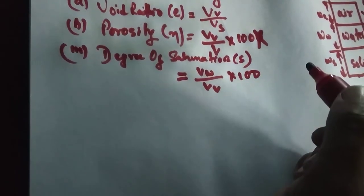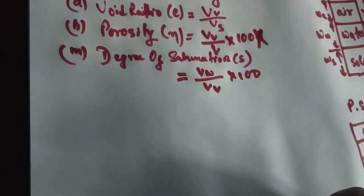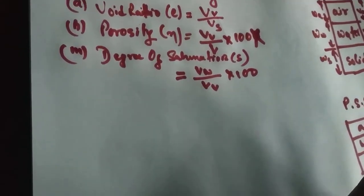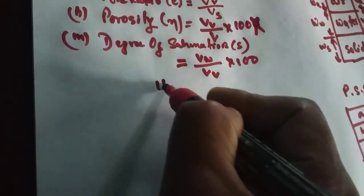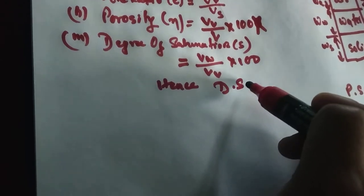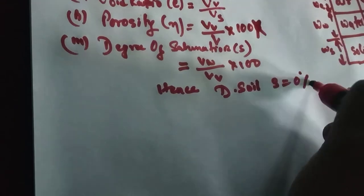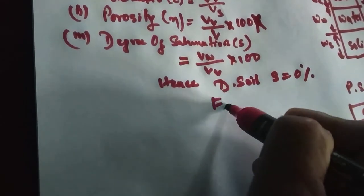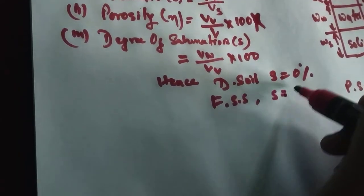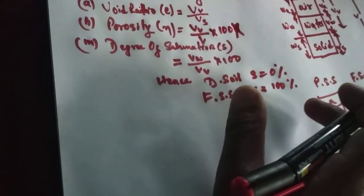For dry soil, the degree of saturation will be zero percent. For fully saturated soil, the degree of saturation will be hundred percent. Please keep this in mind as it will help you while doing numerical problems.